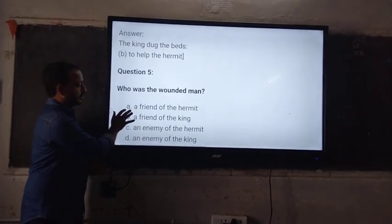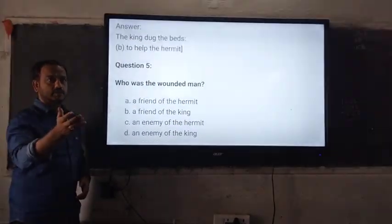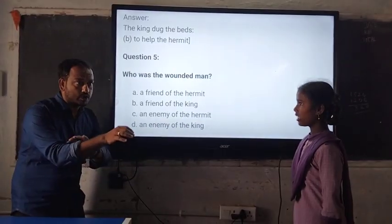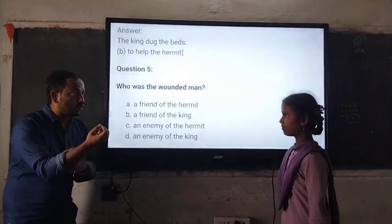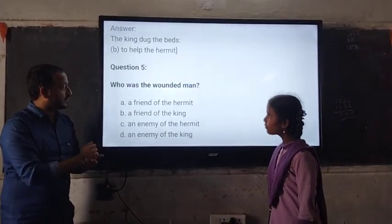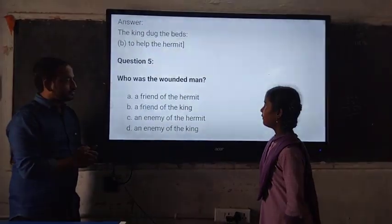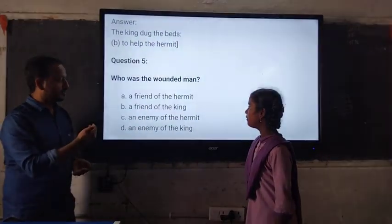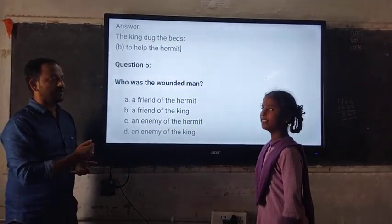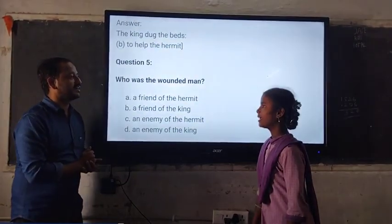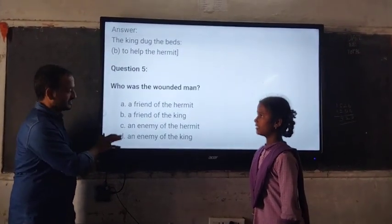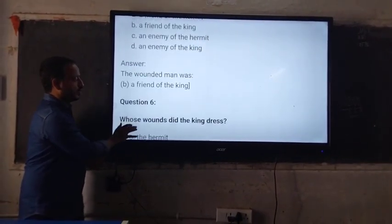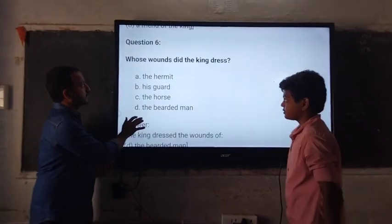Now the last question from the girls' side goes to our victorious Moshita. Who was the wounded man? In the lesson, you saw a bearded man with wounds, right? Who was the wounded man? A. A friend of the army. B. A friend of the king. C. An enemy of the hermit. D. An enemy of the king. Which is the right answer? A friend of the king. Let's check the answer. Answer is: a friend of the king. Now let's invite the boys' answers.